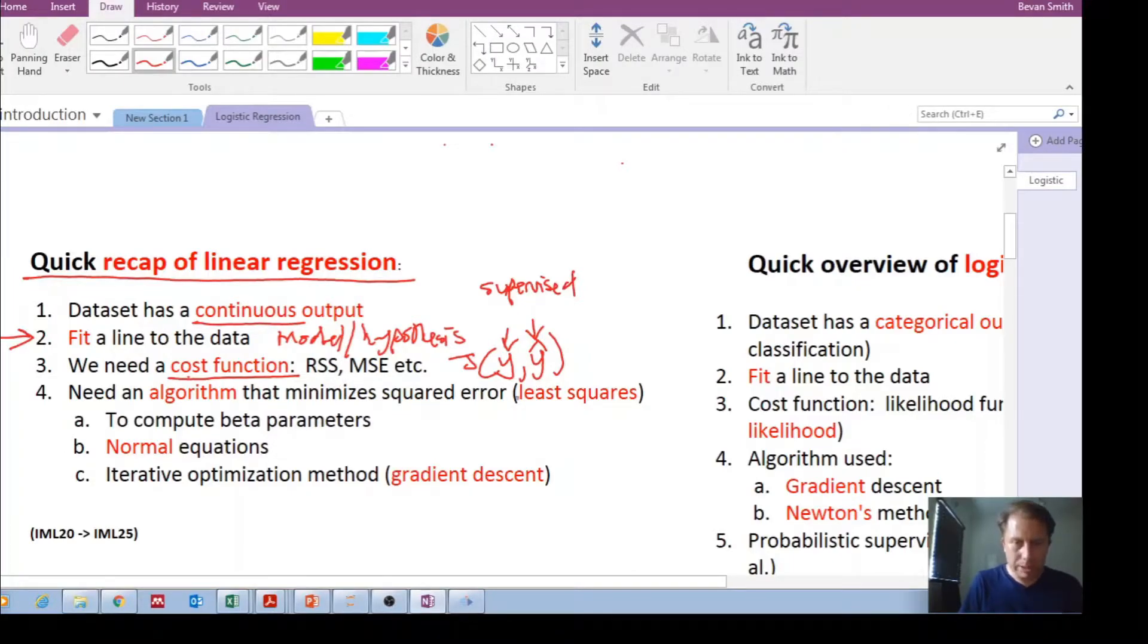The algorithm that we used was least squares, and we were trying to find beta parameters. Remember our model looked like this: beta 0 plus beta 1 x, something like this for a single input feature, and we're trying to find the beta parameters that allow that line to best fit the data.